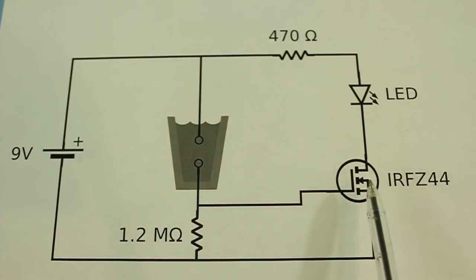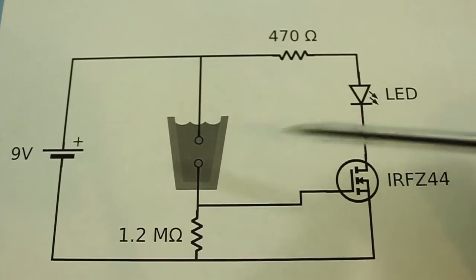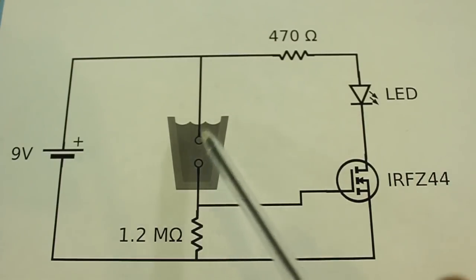In order for the MOSFET to conduct, we need to apply a voltage to its gate. Now here we have two contacts—one goes to the gate and the other to the positive.